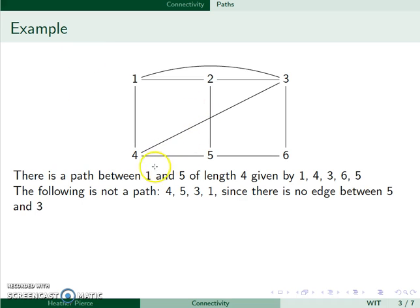4, 5, 3, 1 is not a path because, for instance, I would go from 4 to 5, and then there's no edge between 5 and 3. So that would not be a path.